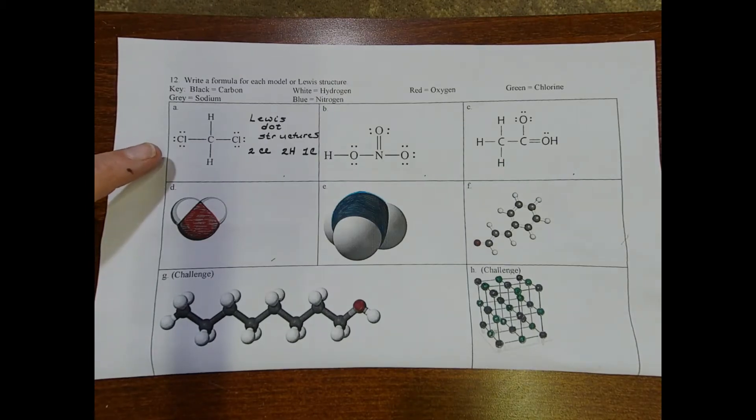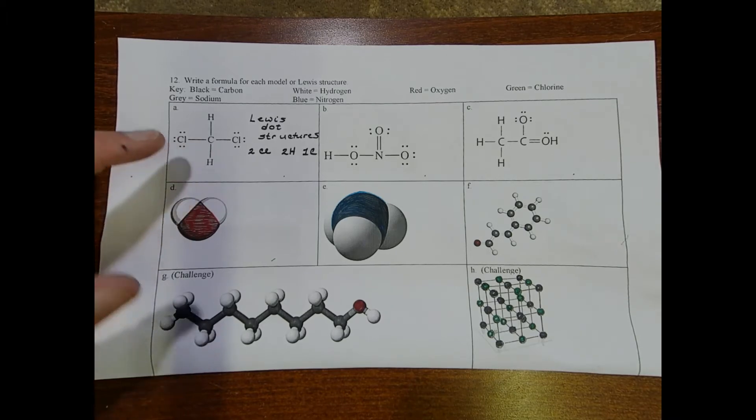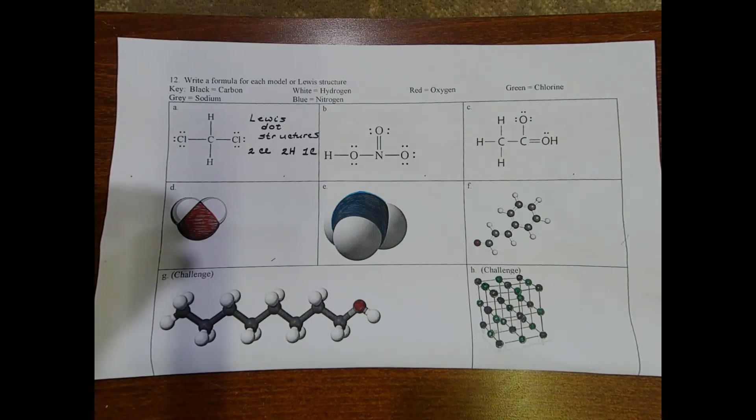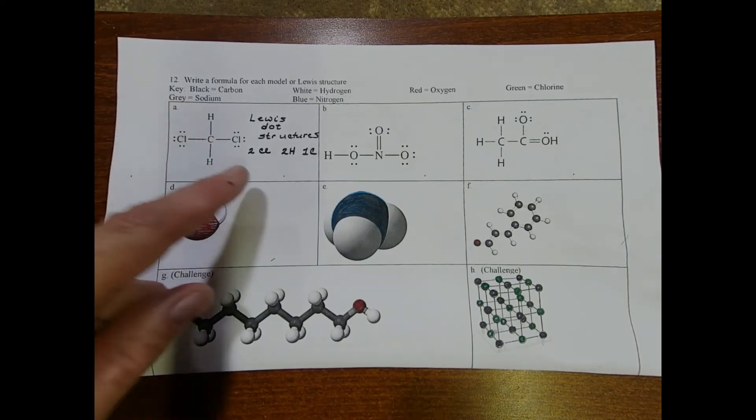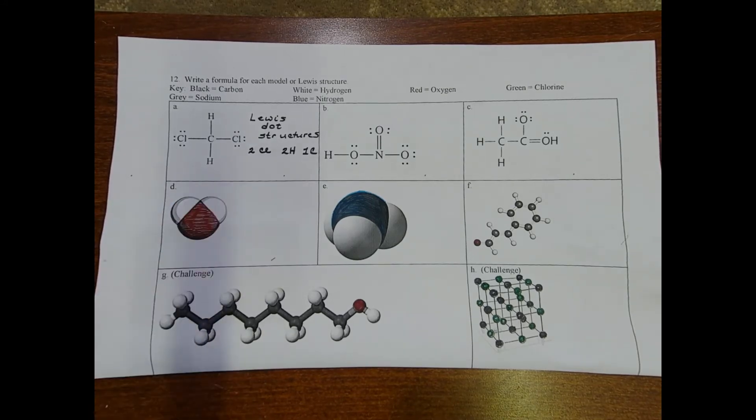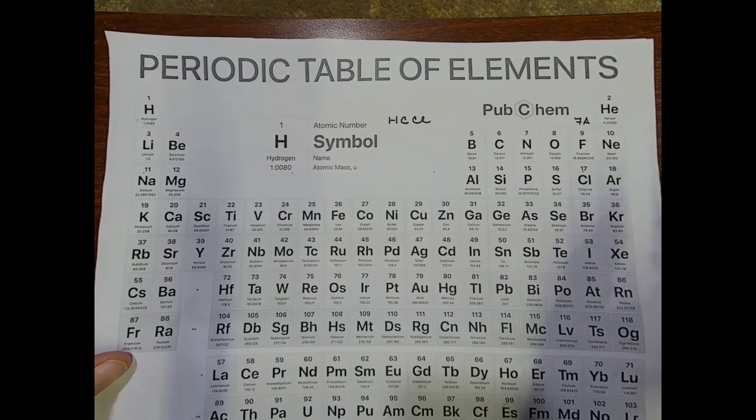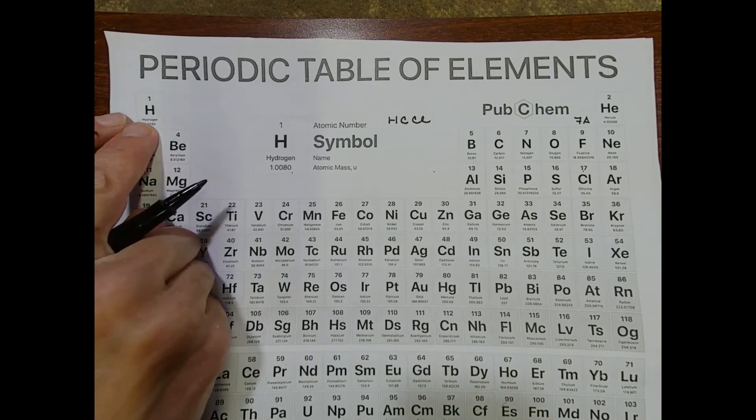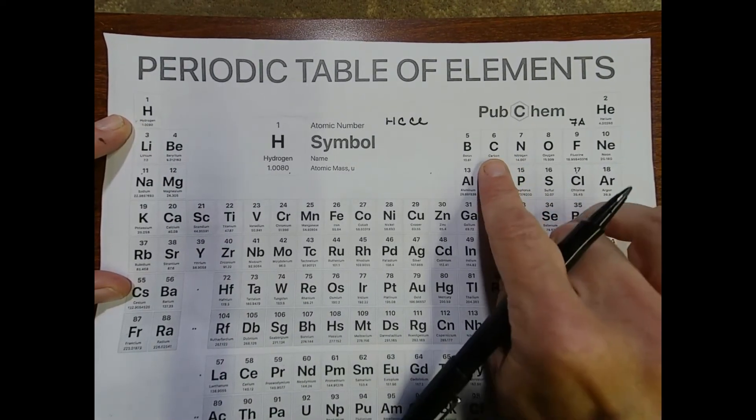So in example A on page 10, we're asked to come up with a formula for this Lewis dot structure. A, B, and C are all Lewis dot structures. You're going to learn eventually how to draw these. They're really cool because they show the bonds and the number of electrons around each atom. But for now, I want you to be able to look at a Lewis dot structure and interpret what you're seeing, kind of come up with a formula. So in this particular example, we have 2 chlorines, 2 hydrogens, and 1 carbon. So if I go to my periodic table, hydrogen's all the way on the left, then carbon, and then chlorine.